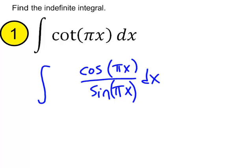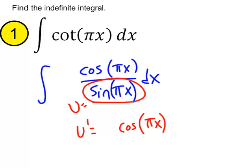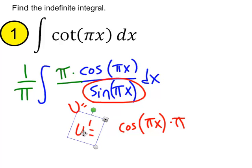This basically fits our u prime over u pattern. If we define this bottom as being u equals sine of pi x, then u prime would equal the derivative of sine, which would be cosine pi x. Now, do the chain rule. So, we need to multiply that times pi. And that just happens to be a multiple of what we have up top. So, let's go ahead and turn that numerator into our u prime. Let's make that pi times cosine of pi x. And to balance it out, we'll put a 1 over pi on the outside of the integral. And we've now got our u prime over u pattern.